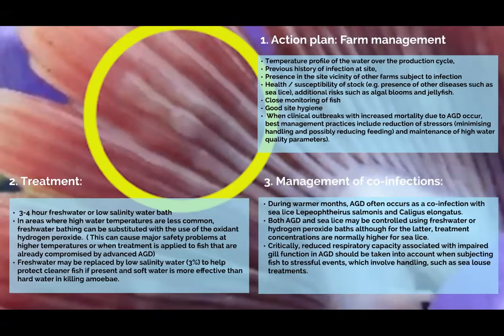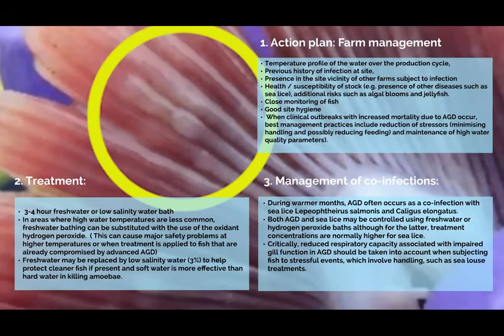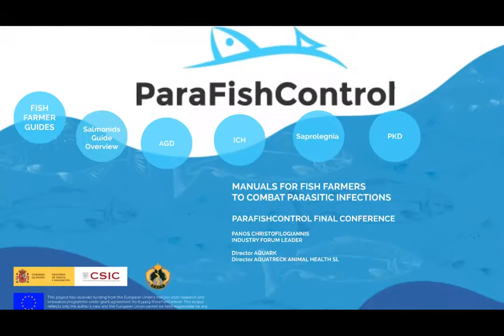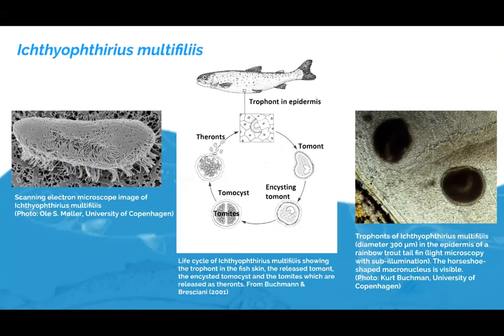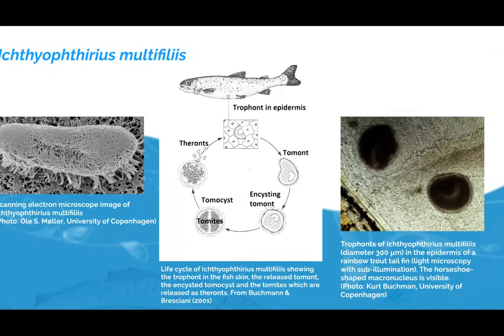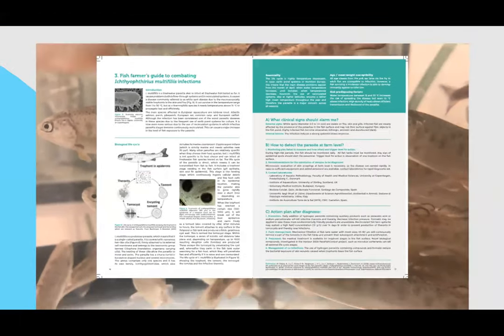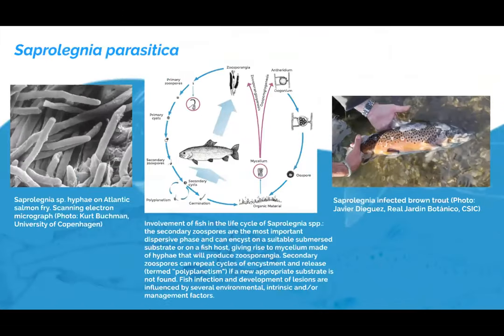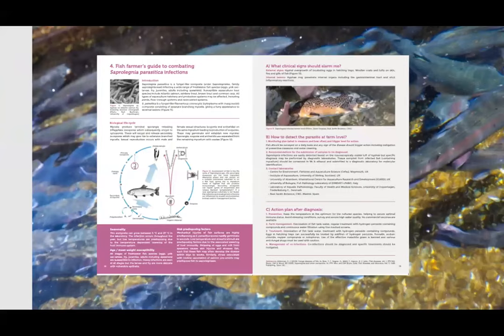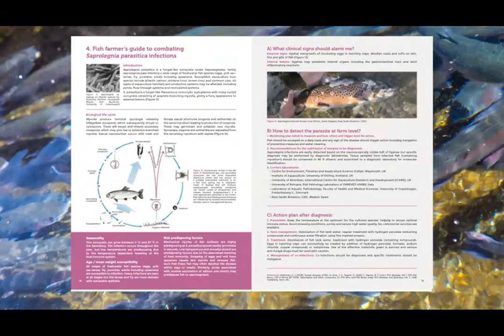The same approach applies for IHN and Saprolegnia, where the guide shows the parasite, the biological cycle, how it looks under a simple microscope, how infected fish look, and combines all of this into one concise set of information — two pages of distilled information for fish farmers to access at any time.